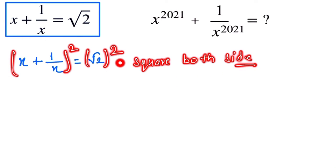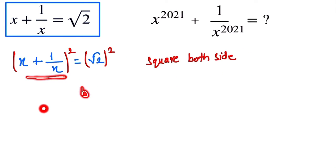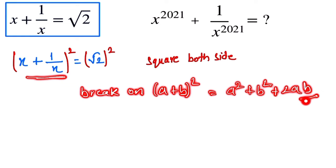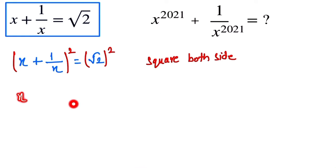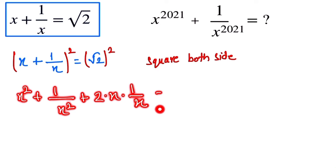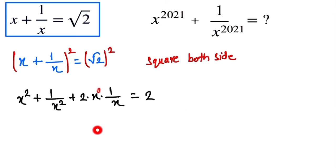We apply the identity (a + b)² = a² + b² + 2ab. So this gives us x² + 1/x² + 2 × x × (1/x) = 2. Now the 2×x×(1/x) simplifies to 2, so we have x² + 1/x² plus 2 equals 2.